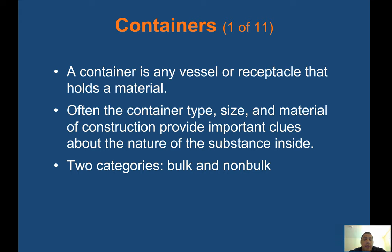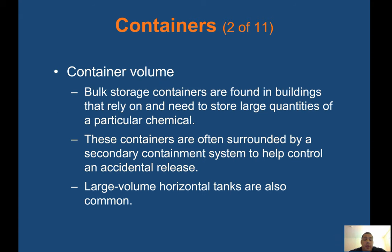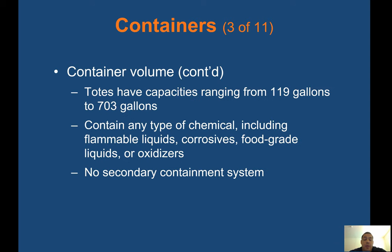Containers: a container is any vessel or receptacle that holds a material. The container type, size, and material of construction provide important clues about the nature of the substance inside. Two categories: bulk and non-bulk. Bulk storage containers are found in buildings storing large quantities of a chemical and are often surrounded by a secondary containment system. Large volume horizontal tanks have a capacity ranging from 119 to 703 gallons and can contain flammable liquids, corrosives, food-grade liquids, or oxidizers, with no secondary containment system.